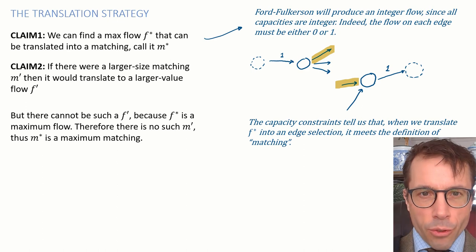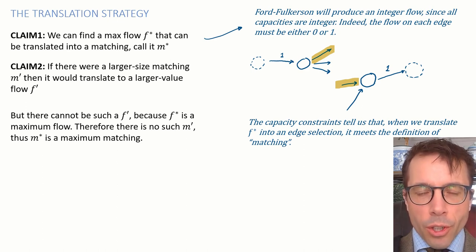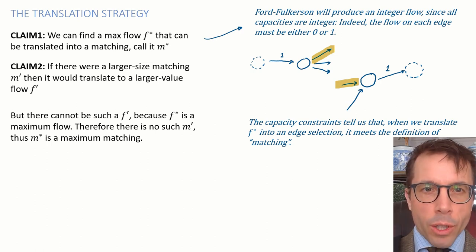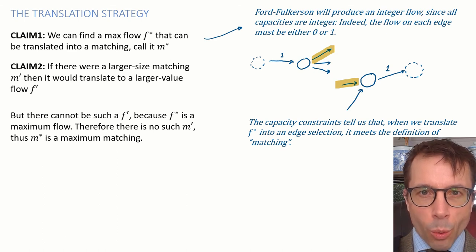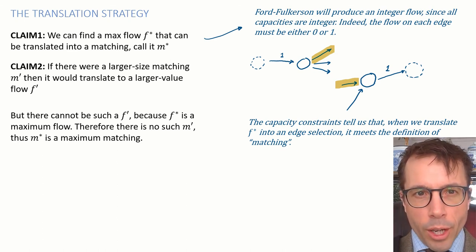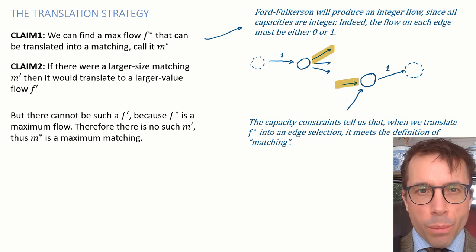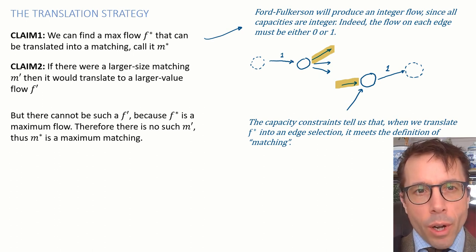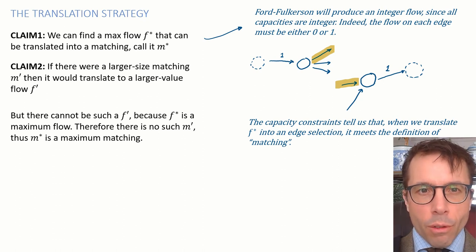And now, because the flows are integer, and because the capacity is one on each edge, that means that each flow on each edge is either zero or one. And if we look at an arbitrary left-hand vertex, it has a total flow in of either zero or one, so it has a total flow out, which is either zero or one, which means that only one of its outgoing edges is active, and likewise for the right-hand vertices. So if we just pick out the edges where F* is equal to one, we do indeed get something which satisfies the definition of matching.